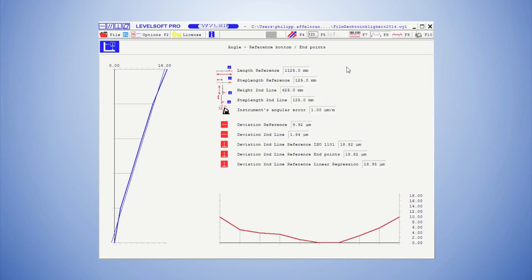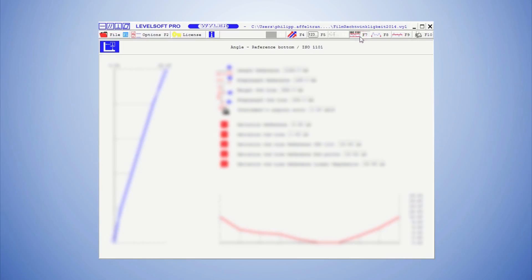To calculate the perpendicularity, the software adjusts to the reference line and calculates the deviation of the vertical line. To adjust the reference line as well as the vertical line, there are three methods: adjustments according to ISO 1101, adjustment according to endpoints, and adjustment according to regression. Consequently, there are possible combinations with a total of nine values.